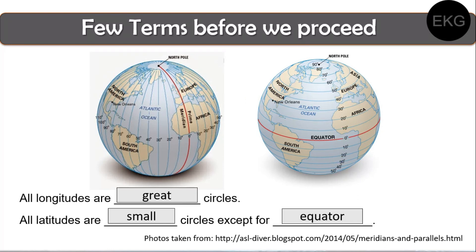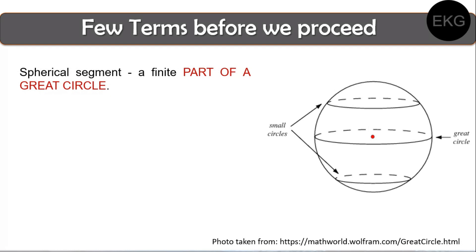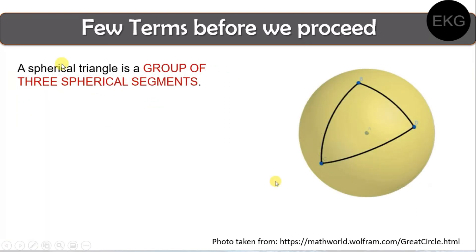Now that we have established what great circles and small circles are, let's discover what spherical segments are. A spherical segment is a finite part of a great circle. For example, within a great circle we have two points, point A and point B. If we interconnect these two points together, this is what we call a spherical segment — a finite part of a great circle. If we have three spherical segments which form a triangle, then we have what is called a spherical triangle, which is basically a group of three spherical segments.